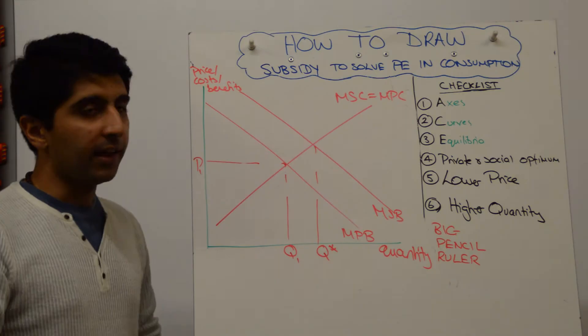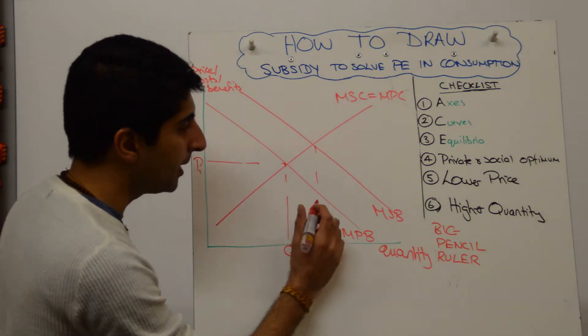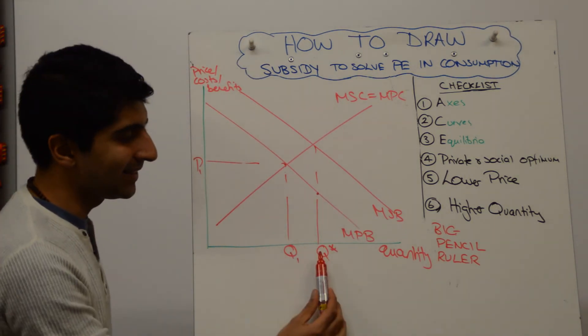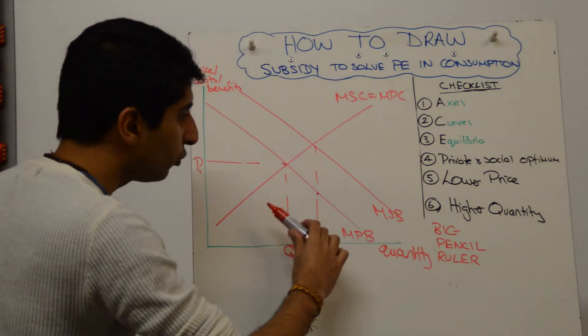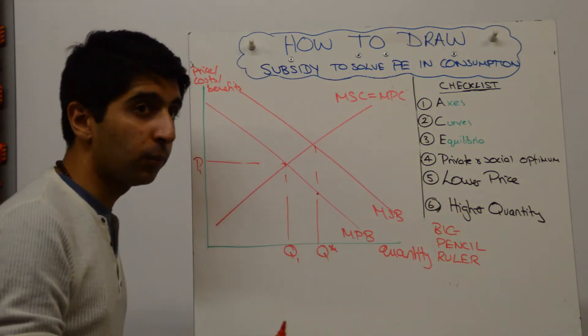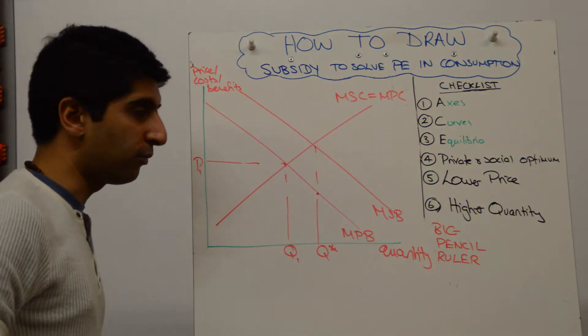Which means that this subsidy, in shifting the marginal private cost curve, will cut the MPB curve here. Because that is the exact quantity which reflects Q-star. So what you need to draw is a parallel shift downwards of the MPC curve to cut the MPB curve at that red dot.